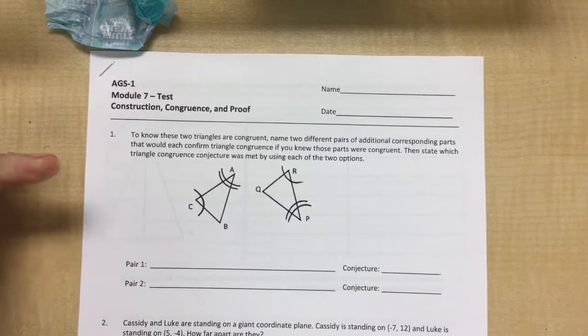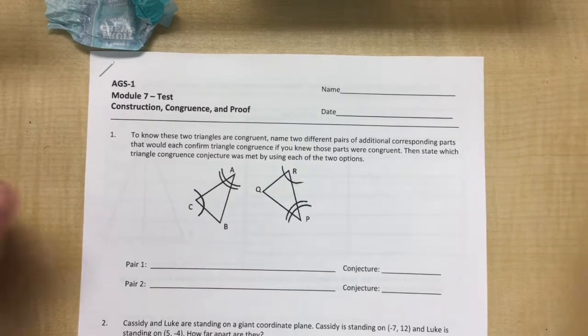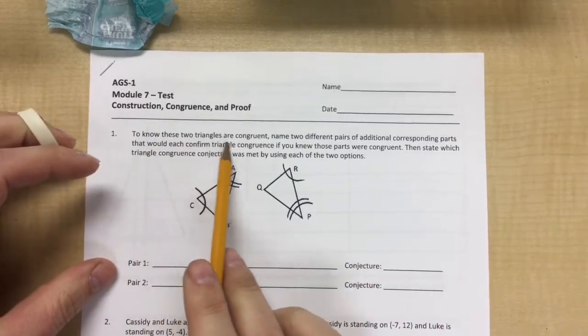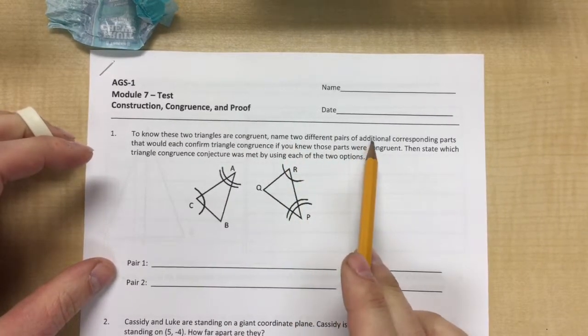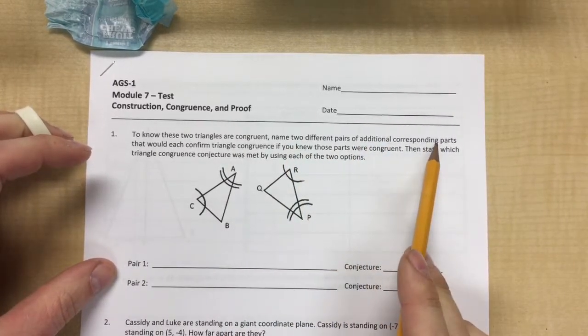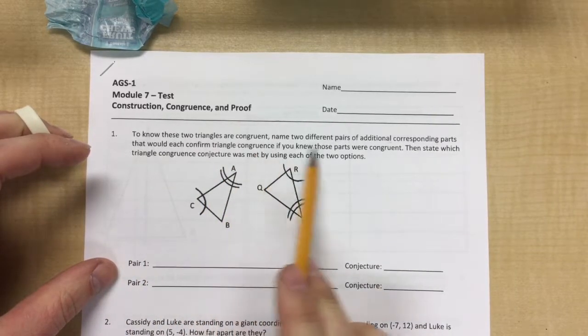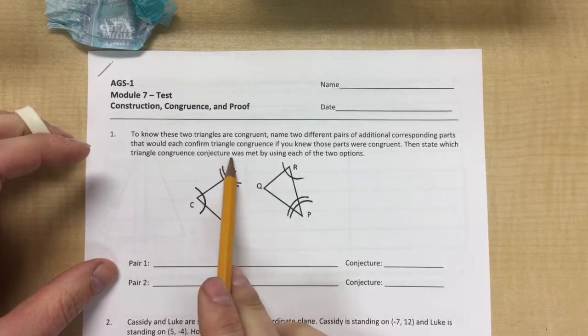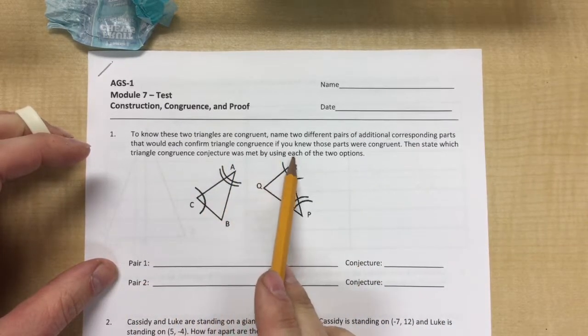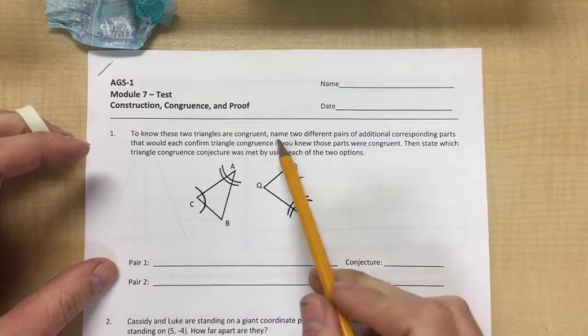So number one: to know these two triangles are congruent, name two different pairs of additional corresponding parts that would confirm each triangle congruence if you know the parts were congruent, then state which triangle congruence conjecture was met by using each of the two options. Okay, so here we're being asked to name two different pairs of corresponding parts.